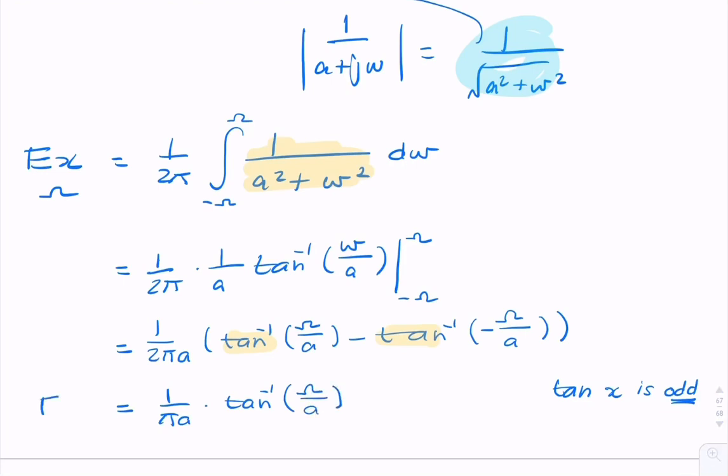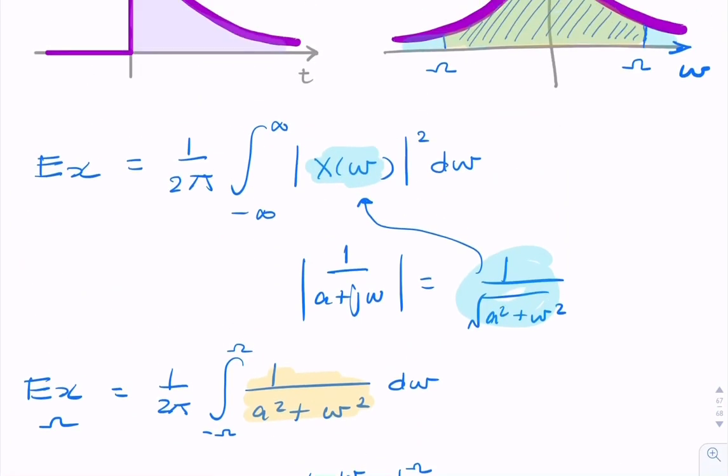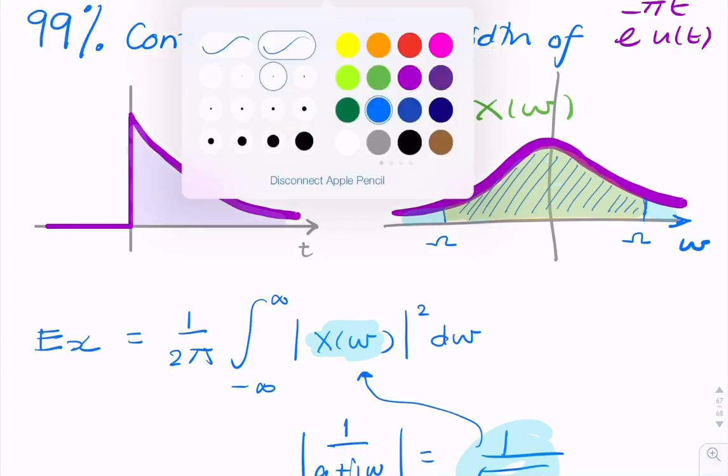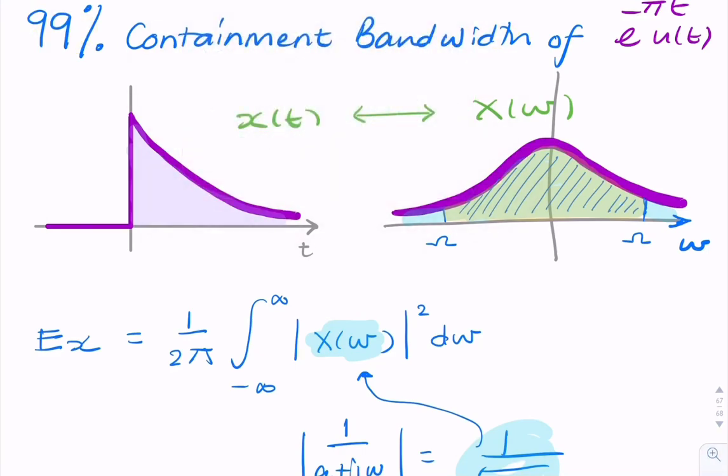And that still hasn't answered the question, because the question is, what's the 99% containment bandwidth? What's the value of omega? So we still need to do a little bit of work.